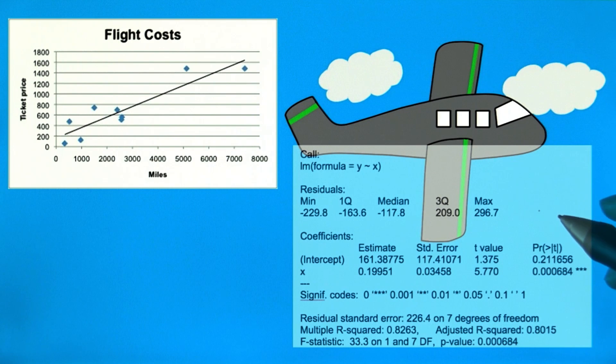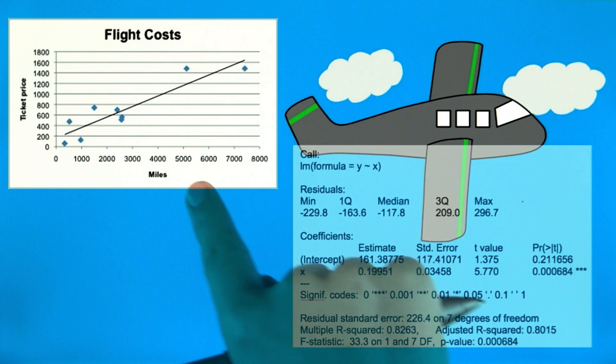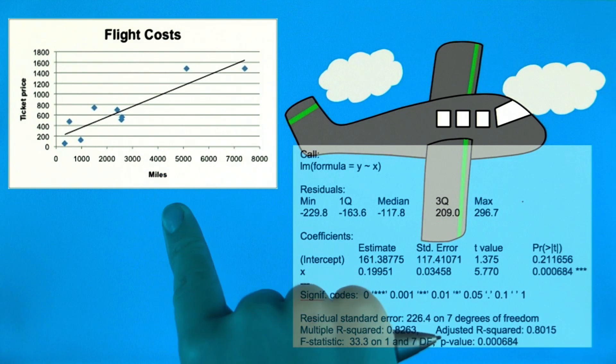In fact, the t-statistic I gave you is the one that we get when we do a hypothesis test for the plane flight distance versus cost that we talked about earlier.